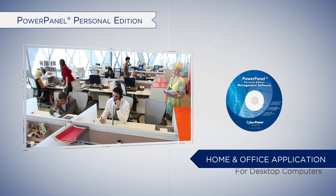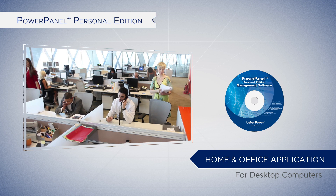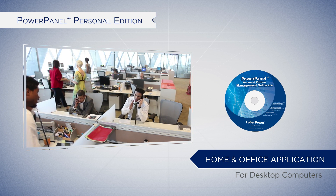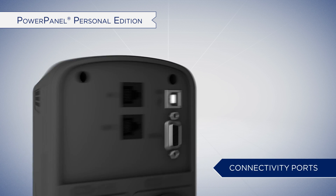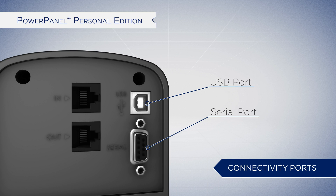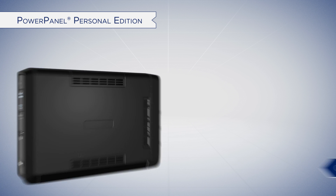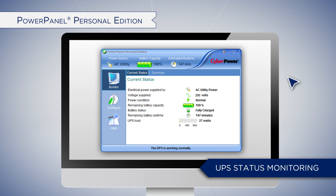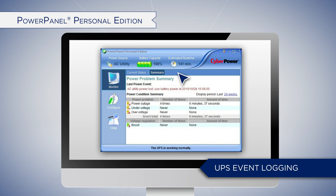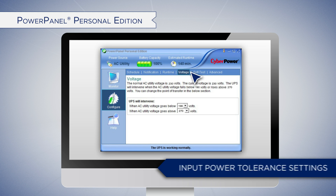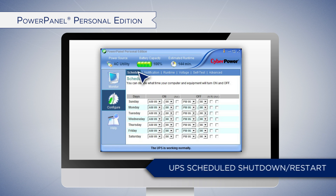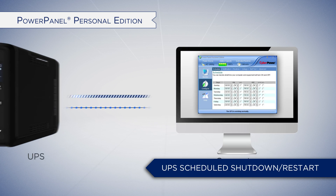The PowerPanel Personal Edition software best supports home and office applications such as desktop computers to perform system graceful shutdown, by connecting the UPS to an individual computer via USB or serial port. The Personal Edition supports easy UPS status monitoring, UPS event logging, and input power tolerance settings to enhance device protection. The software also features UPS scheduled shutdown and restart to help users optimize power consumption.